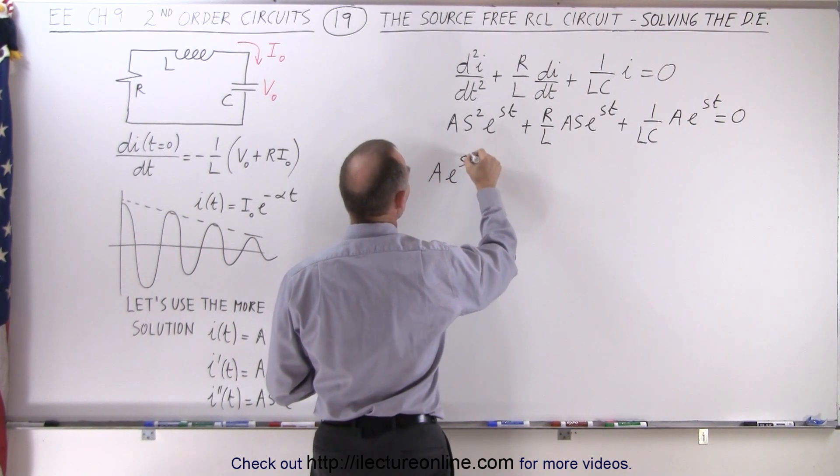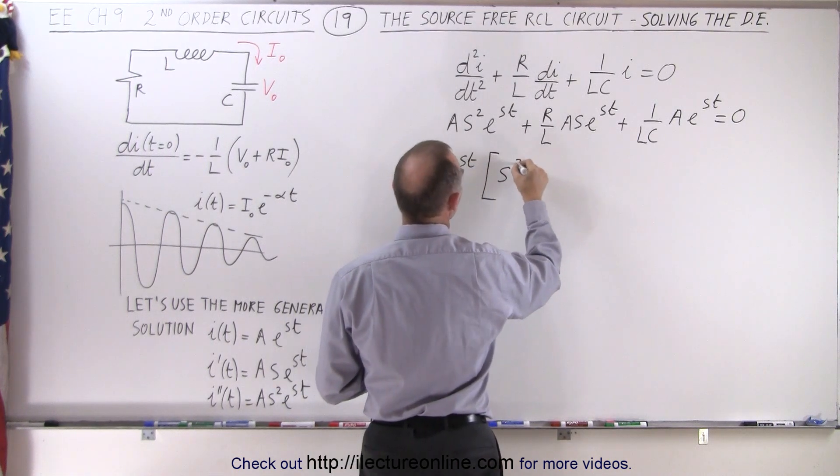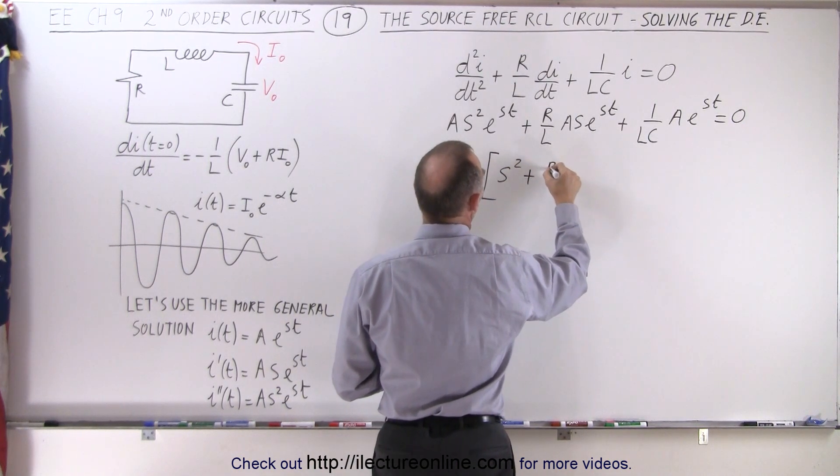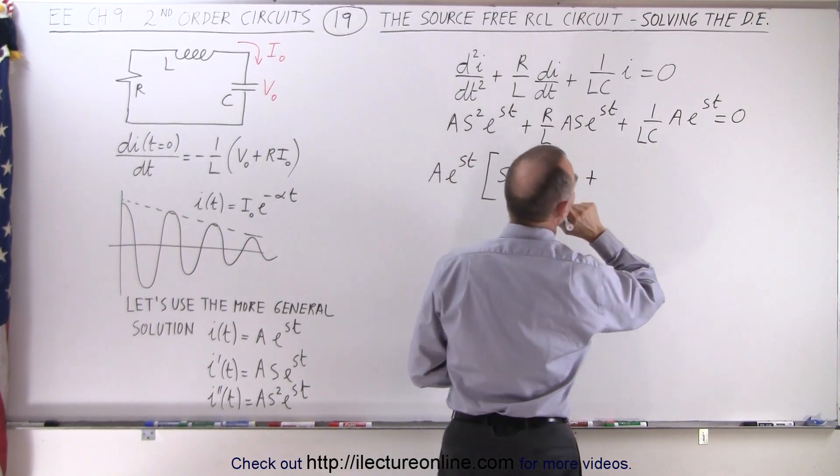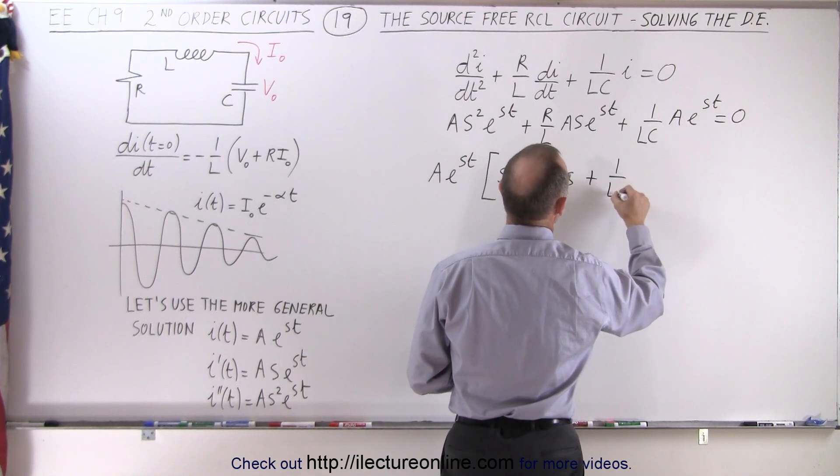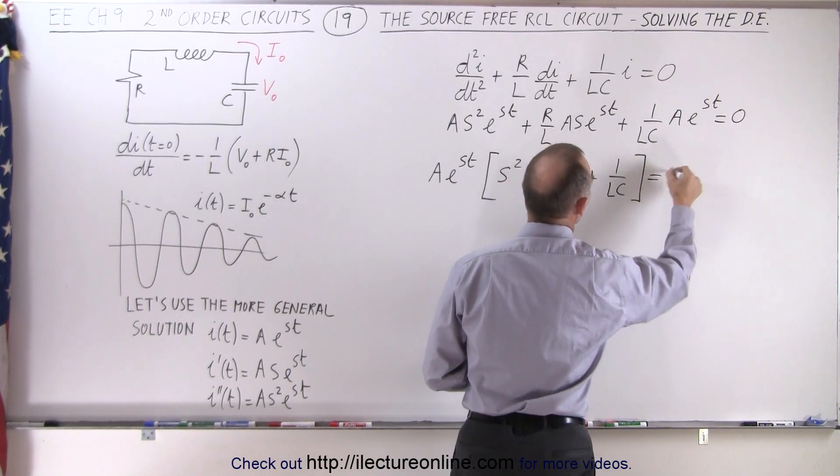a e to the st times, we have an s squared plus r over l times s plus 1 over lc without the s, s to the 0 power, and all that equals 0.